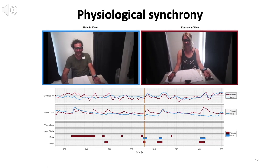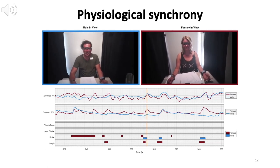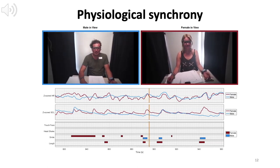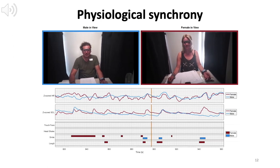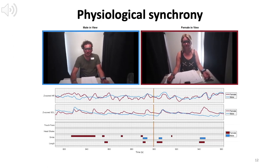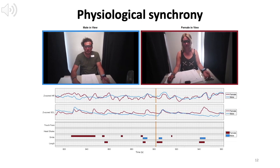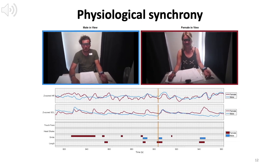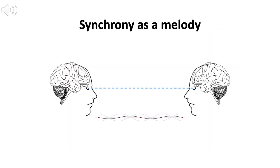What we found was that it was the synchrony between physiological signals that predicted couples' attraction. The more the couples synchronized their heart rate and sweating responses with each other, the more attracted they became to each other.